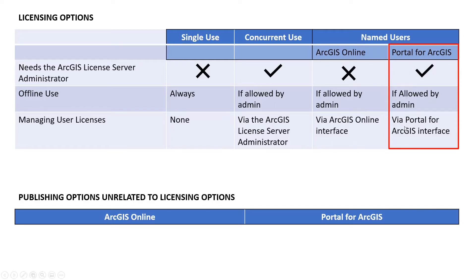Portal for ArcGIS manages the licenses through the Portal for ArcGIS interface. However, the very important thing to note is that in the background, Portal is talking to a license server administrator. So concurrent-use and named users coming from Portal for ArcGIS are actually very much the same. The main benefit to setting things up via Portal is that you have the Portal homepage interface where you can decide which users get access to ArcGIS Pro, whereas with concurrent-use the administrator would log in to the actual machine where the license server is installed.